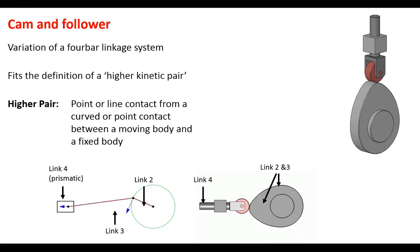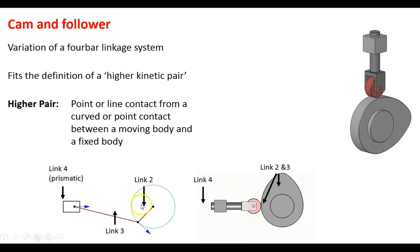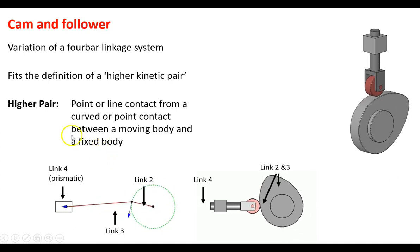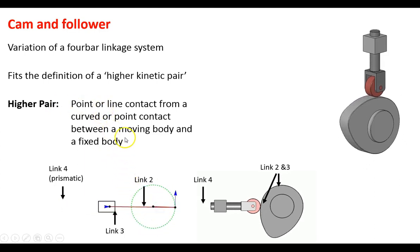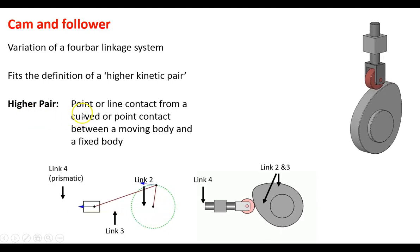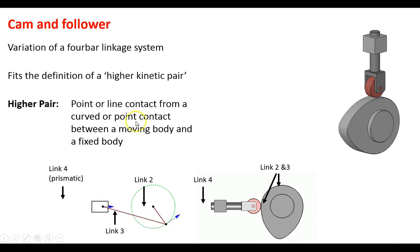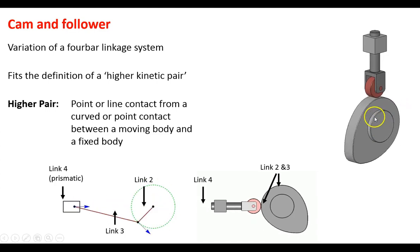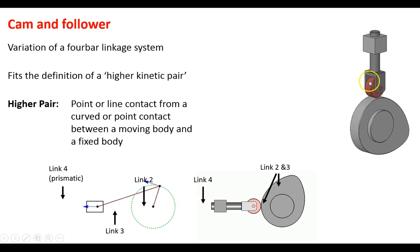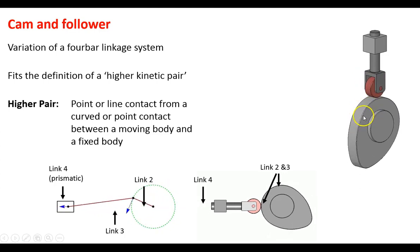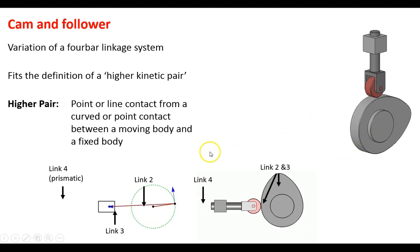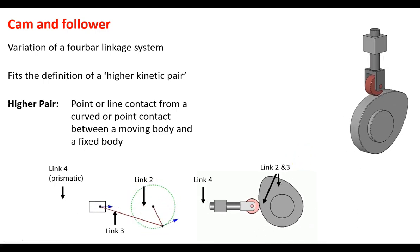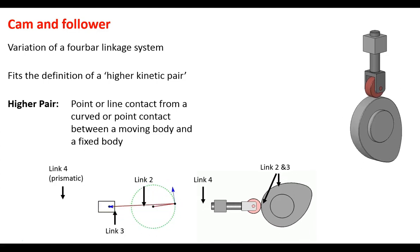From the first video on linkages, the six types of linkages are considered lower kinematic pairs, typically with one to two degrees of freedom. With a higher pair, you've got a point or line contact between a curved surface on a moving body and a fixed body. This is the perfect description of a cam — you've got a point or line of contact, a round follower, and a round cam — making it a higher kinematic pair.